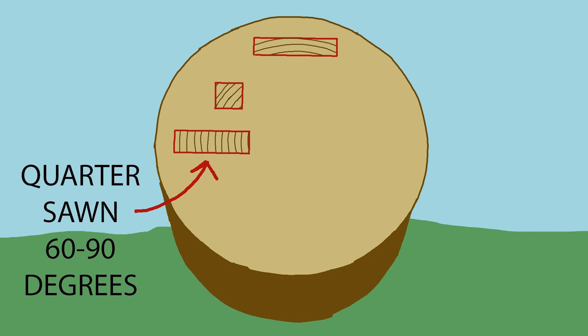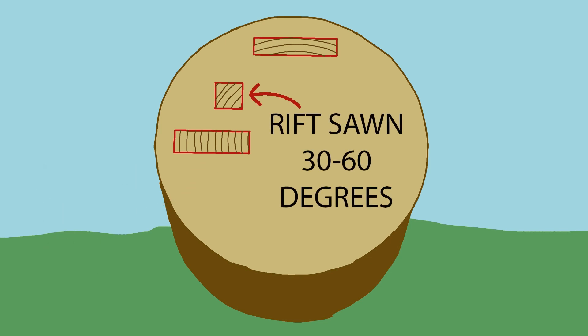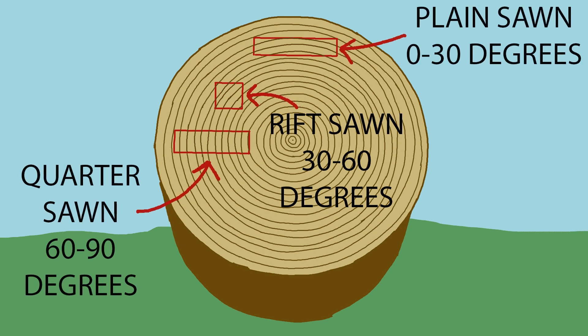Falling right between plain sawn and quarter sawn is rift sawn, which has growth rings running roughly diagonally through the board. So what we end up having are straight lines cutting through concentric circles, so these categories are general, and boards will often not fall cleanly into just one category.